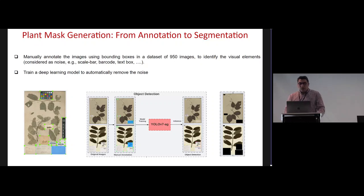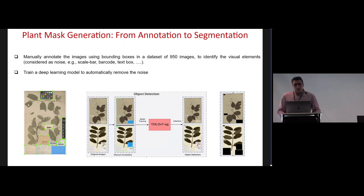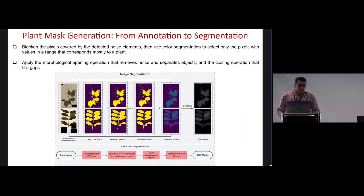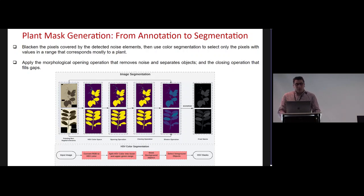In the first step, we manually annotated a set of images using bounding boxes, then used that dataset to train our deep learning model to identify non-plant elements and remove them. Once removed, we blacken the pixels covered by the detected noise elements. Then we use color segmentation to select only the pixels with values in the range corresponding mostly to a plant. We then apply a morphological opening operation that removes noise and separates objects, followed by a morphological closing operation that fills the gaps.